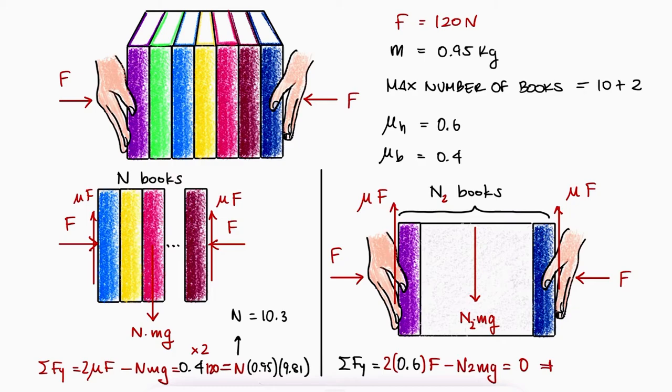This is the number of books that we would be able to hold if the friction coefficient between all of the books and the hands was 0.6, but this isn't the case we have.